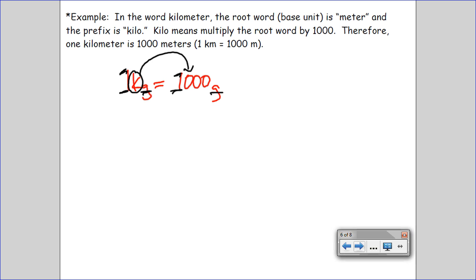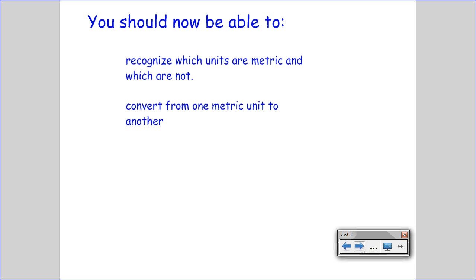So the units in the metric system are designed so that you can abbreviate them and make them a lot simpler. So now at this point you should recognize which units are metric and which units are not. Again, we are talking about grams, meters, and liters.